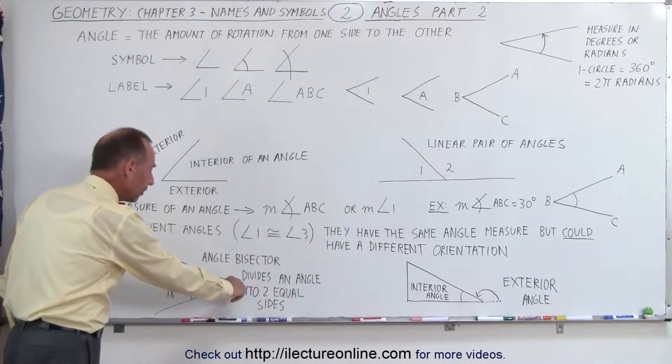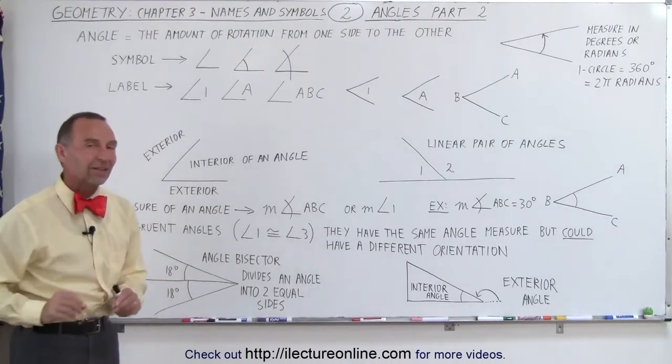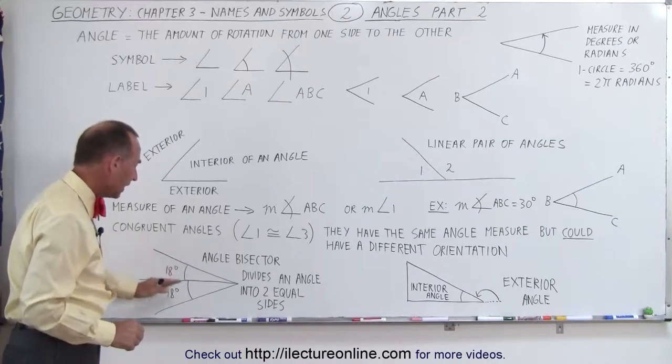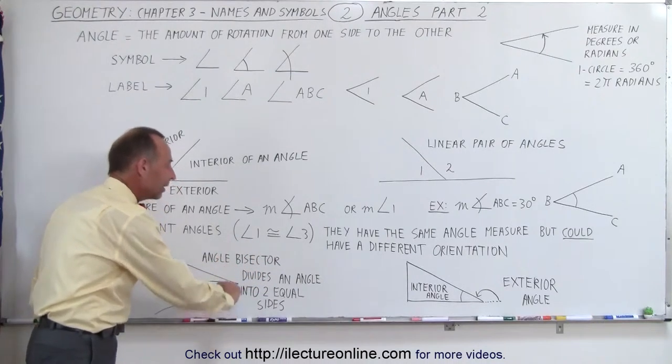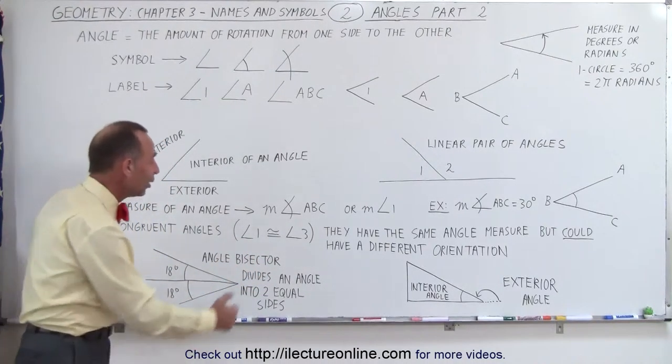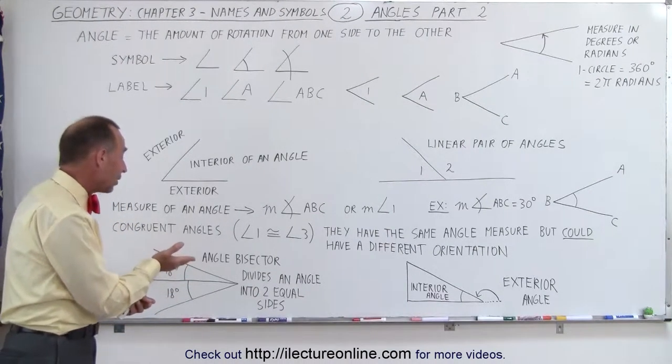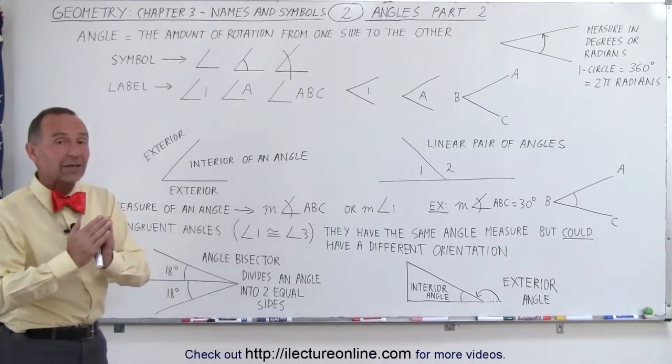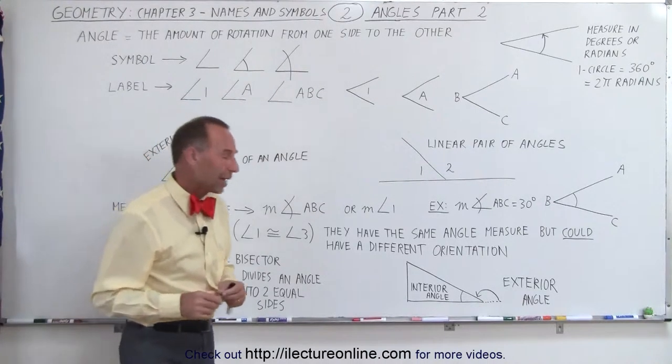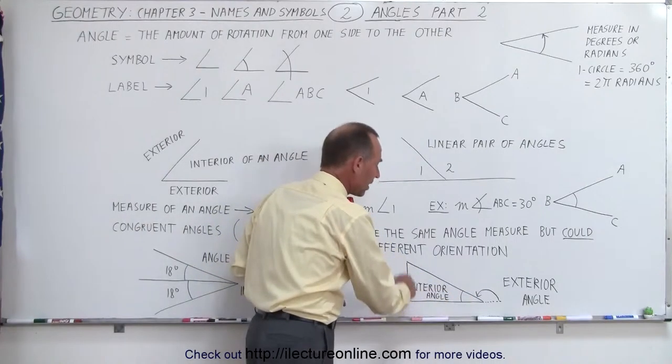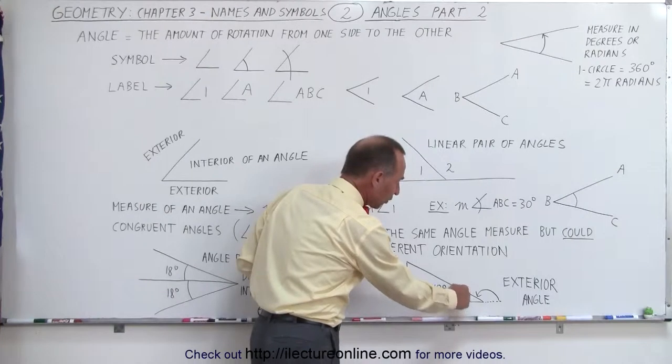Also now let's talk about what we call the angle bisector. Here we have an angle and let's say that the angle had an angular measure of 36 degrees. Now we draw a line where it connects to the vertex of the angle and the angular measure on either side of the line is exactly the same, 18 degrees and 18 degrees. An angle bisector divides an angle into exactly two equal sides. Of course I don't have to say the word exactly but that's what it means.